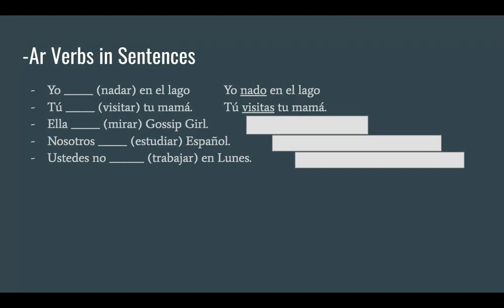Now we're going to do 'mirar' in the ella form. Mirar minus the AR is 'mir'. The ending for ella — which is also the same as él and usted — is 'a'. So ella gives us 'mira'. She watches Gossip Girl, though sadly they just took it off Netflix.